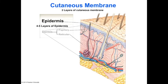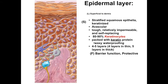Each of these layers are going to contribute to different characteristics of the epidermis. Overall, this is a stratified squamous epithelia and is keratinized — that is, it is dry — and it is also relatively impermeable and tough.